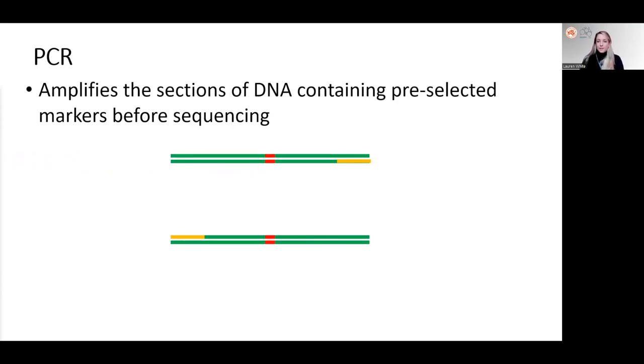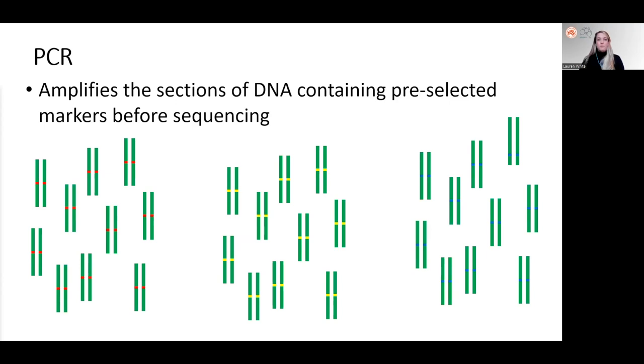By repeating this process many, many times using primers that target many different markers, we can end up with many copies of the markers we're interested in. So even if we have a very small amount of DNA to begin with, we can amplify the markers we're interested in to make them easily sequenceable.